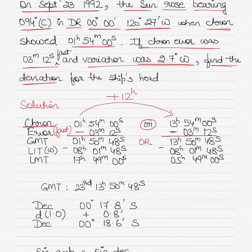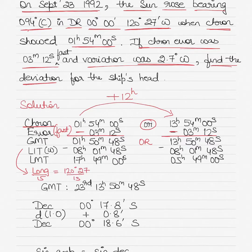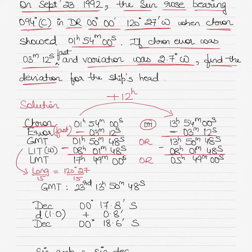To determine the correct GMT, calculate Local Mean Time by applying the longitude-to-time correction. Divide the longitude (120 degrees 27 minutes) by 15 to get 8 hours 01 minutes 48 seconds. Since longitude is west, subtract it from GMT — 'longitude west, GMT is best' means GMT is greater than LMT — giving two possible LMT values.